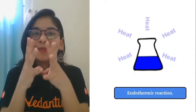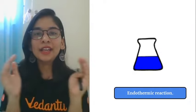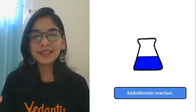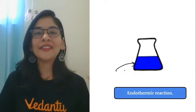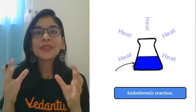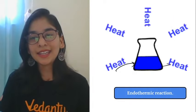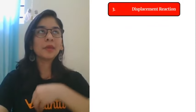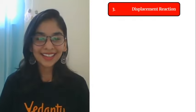In endothermic reactions, energy is absorbed from the surroundings. If you touch the beaker in which an endothermic reaction is happening, it will feel a bit cold, because energy is being absorbed from the surroundings. In exothermic reactions, energy is released — so the surroundings feel hotter. This is how you can detect the type of reaction by temperature change.